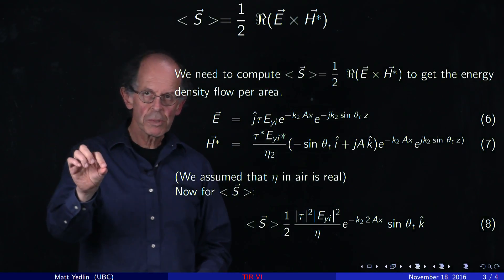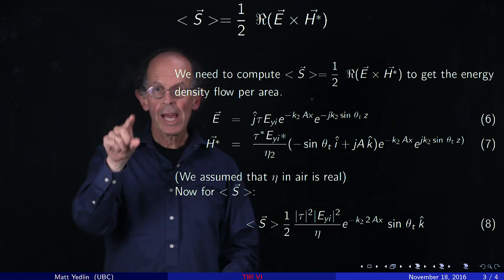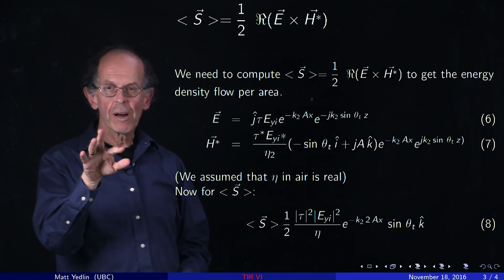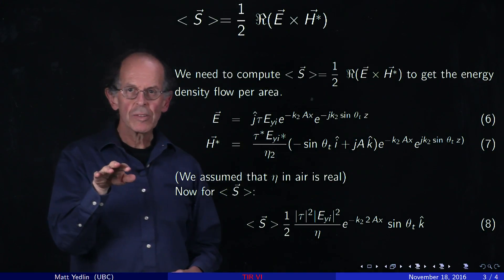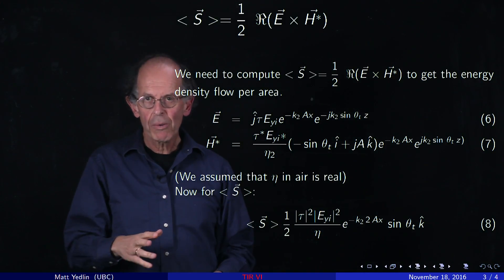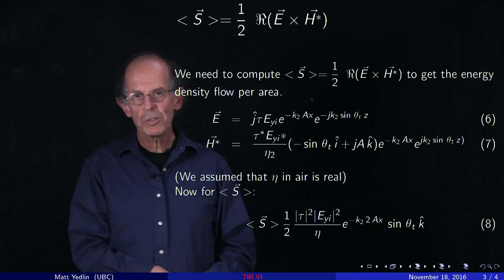E, volts per meter. H, amps per meter. The product, volt amps per meter squared, which is watts per meter squared, power per area. So let's do the algebra.